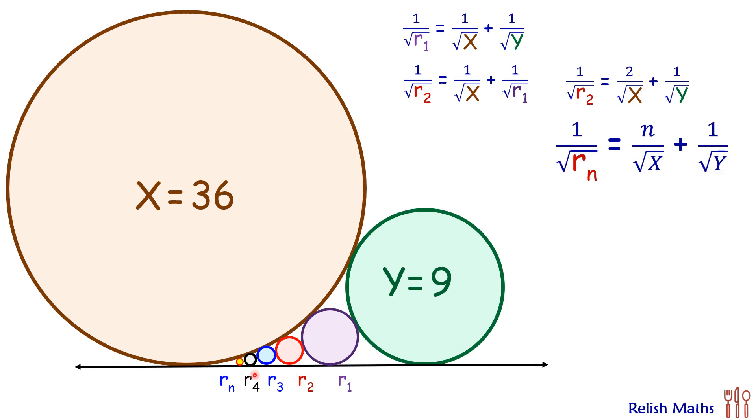So let's check out for our blue circle, that's the third circle here. So here 1/√r3 will be equal to 3/√36 + 1/√9. Solving it further we will get r3 as 1.44 centimeter.